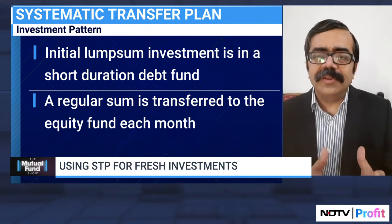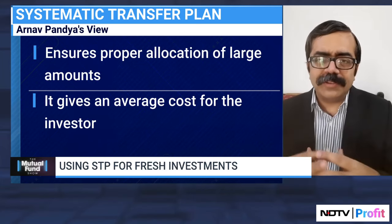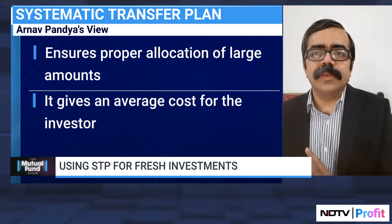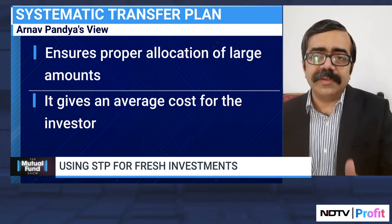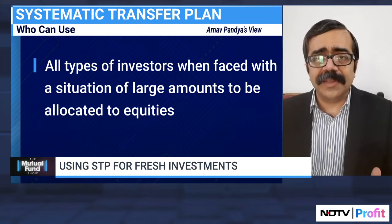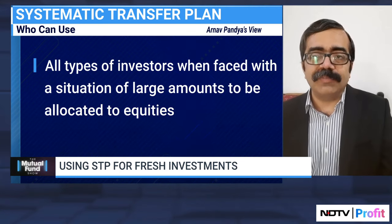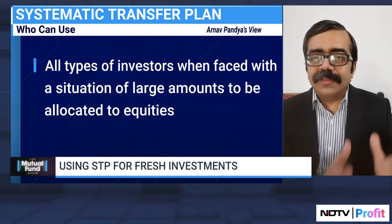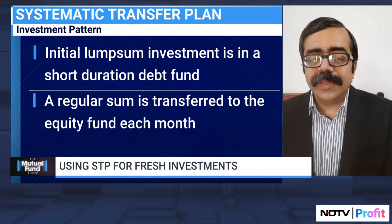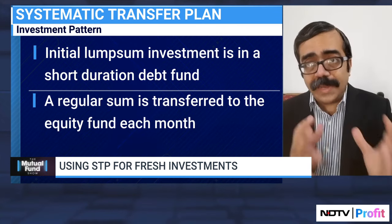If you have a lump sum, you don't want to invest in haste and repent later saying you should have waited or spread out the investment — the STP does this automatically for you. At the same time, it's not that the lump sum is lying in a savings account earning 3 to 3.5%. You're putting it in a debt fund where, due to the current liquidity scenario, you're actually getting good returns on short-term debt funds as well.